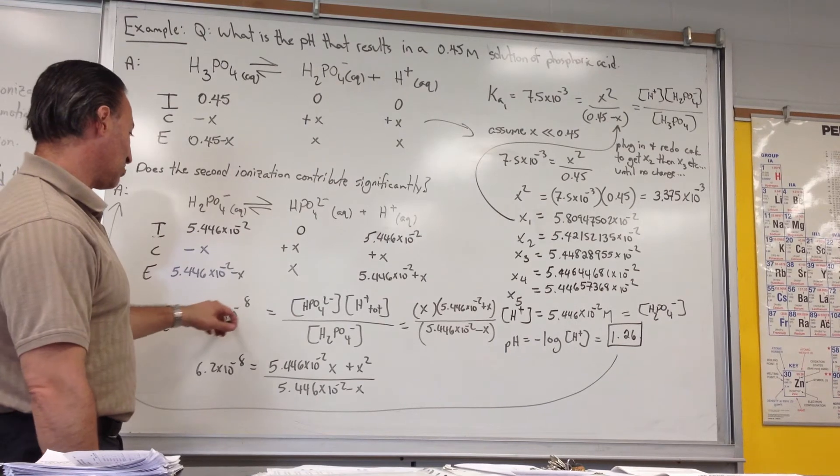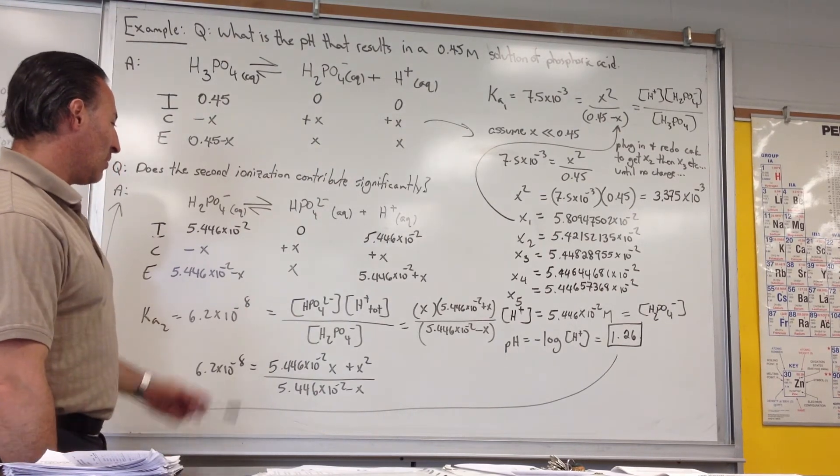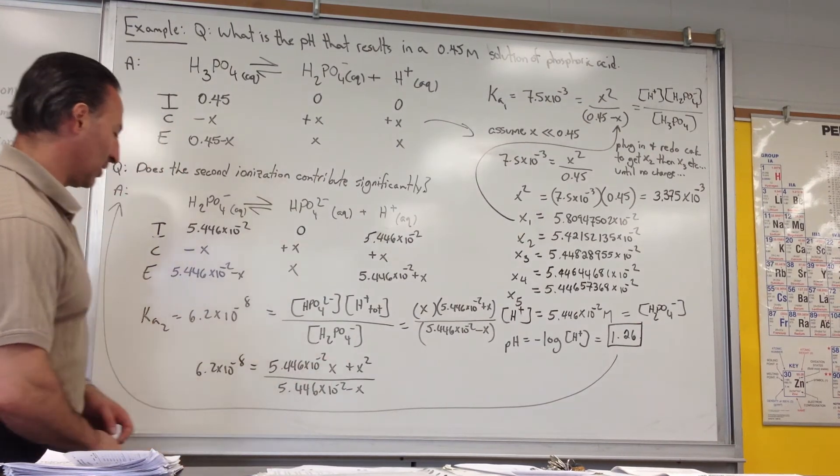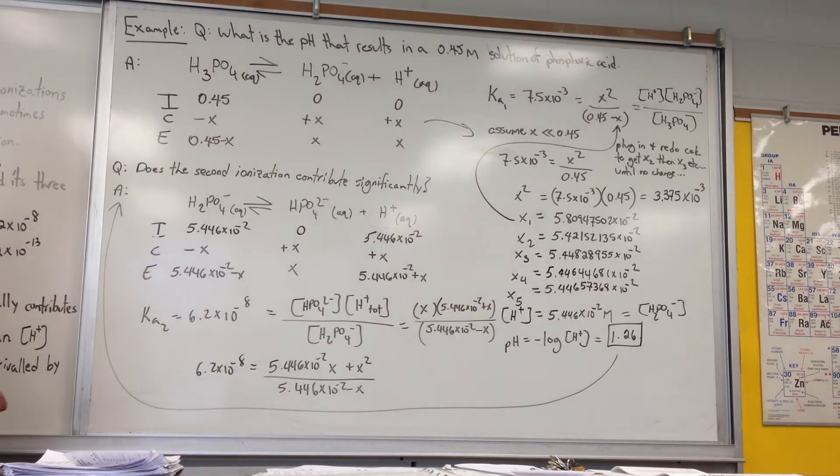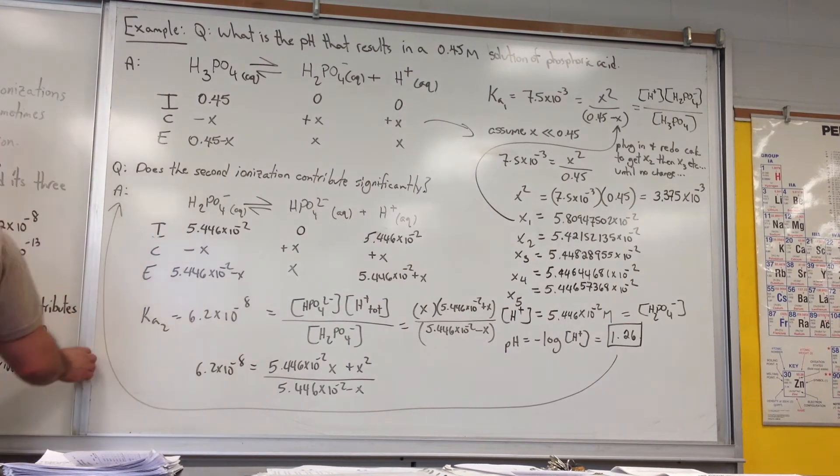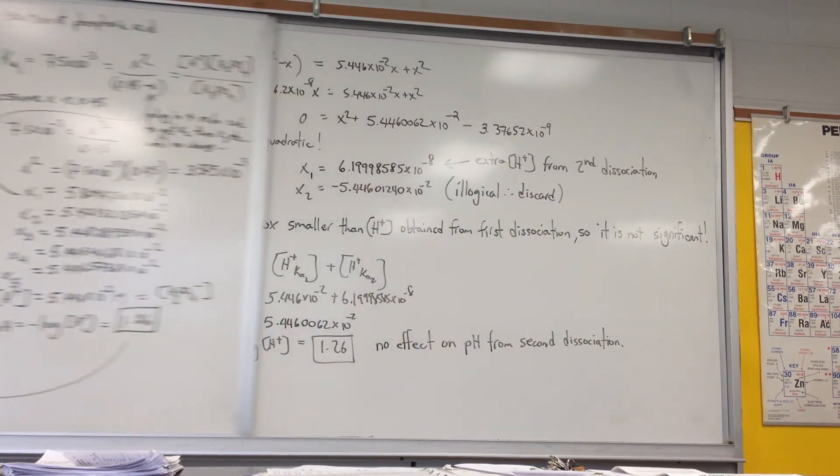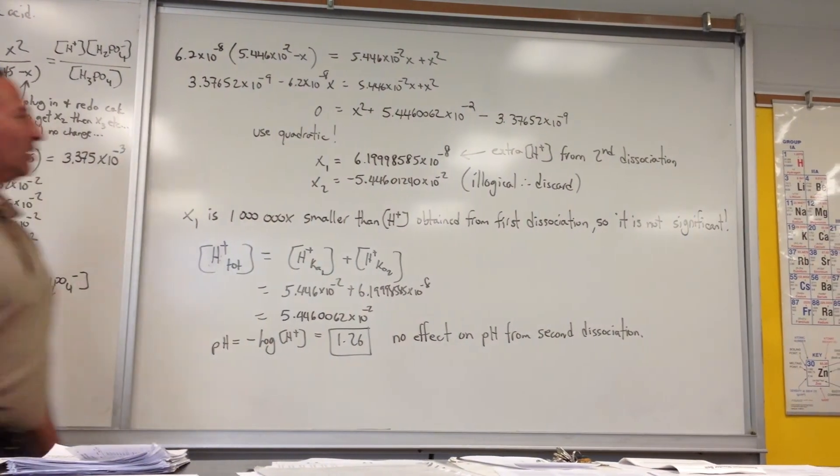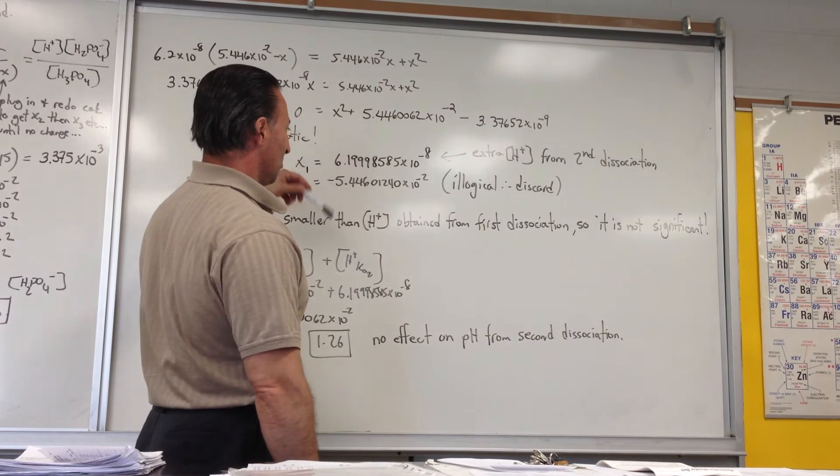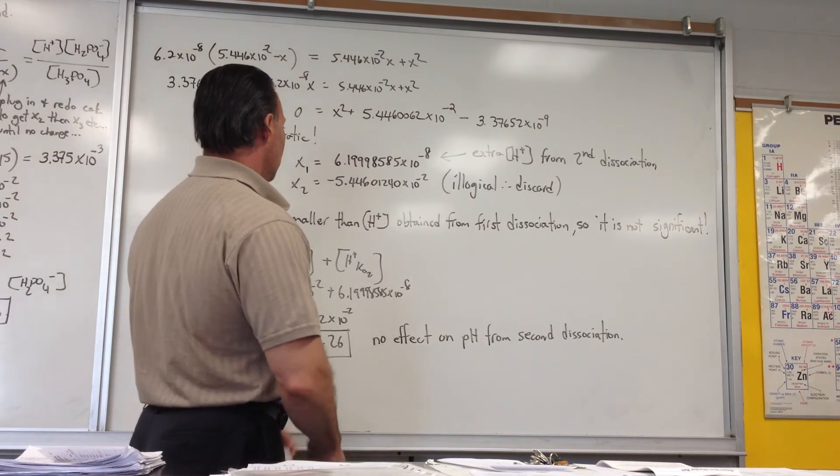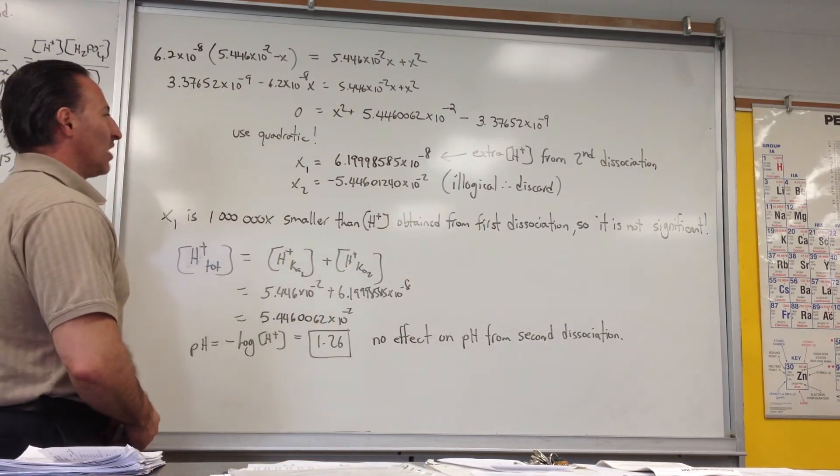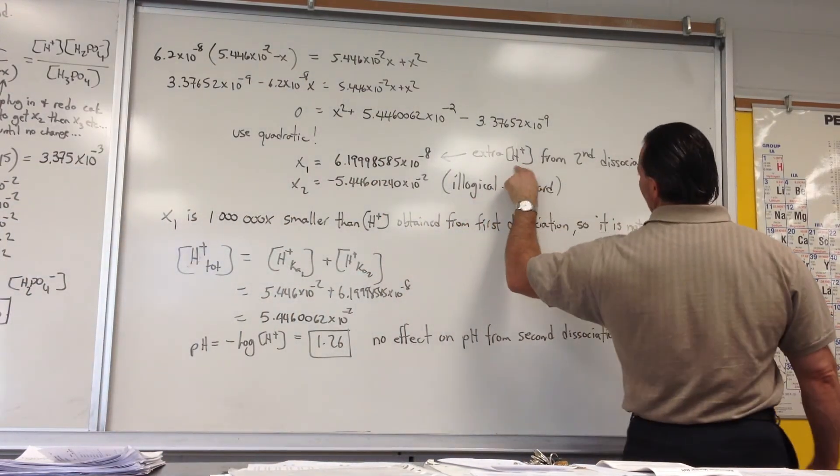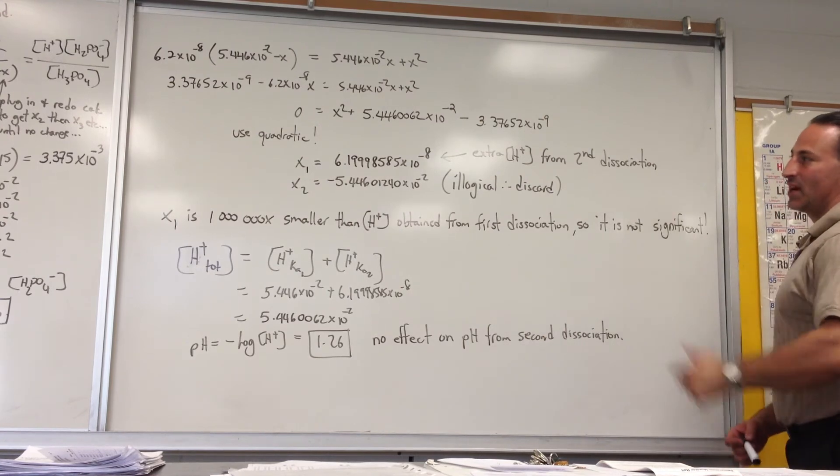Now the Ka sub 2 value is 6.2 times 10 to the minus 8. When we do the math and we use the quadratic formula to do this one, because if we try to use the iterative formula it gets too messy, the result is we get two values. One is negative which we discard because it's not possible. And the first value is 6.2 times 10 to the minus 8. That value of X represents the extra hydrogen ion that is dissolved from the second dissociation.